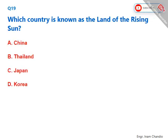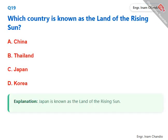Which country is known as the land of the rising sun? Japan is known as the land of the rising sun. The correct answer is C. Japan.